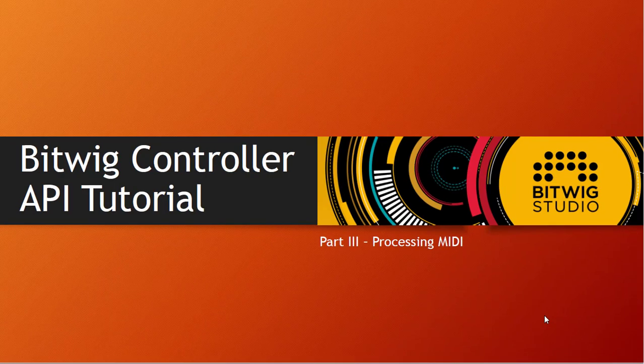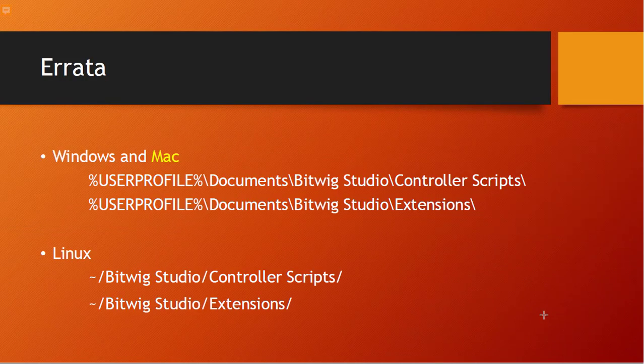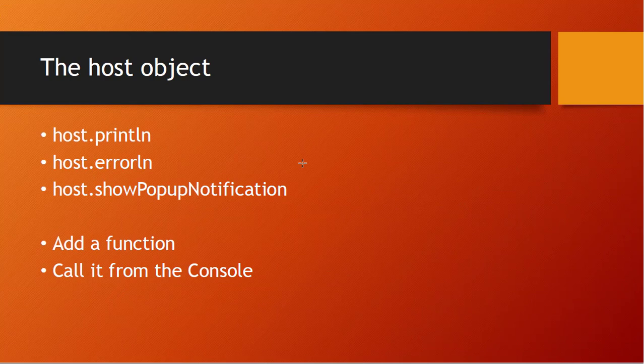Hello and welcome to the third part of the Bitwig controller API tutorial - programming essentials. Today we're going to dive into processing MIDI coming from your controller. Before we dive in, I have a little errata from the second part: a viewer pointed out that on Mac, the controller scripts and extensions are located inside your Documents folder, not at the top level like on Windows.